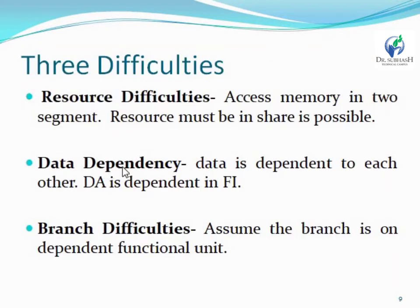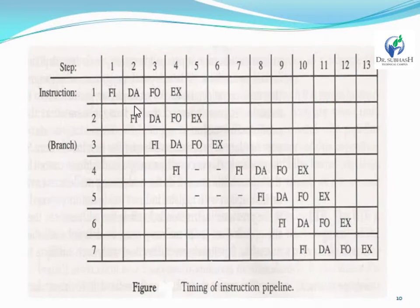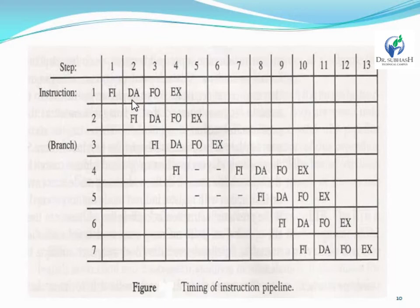The second is data dependency. It means the resources will be dependent on each other, and then the next process will not be executed. The DEA will be dependent on A5, so this process will not be executed in A5 because the resource will be dependent on the previous result. For example, if the output is dependent on the previous result of DEA, then the process will not be executed until the result of DEA is available.